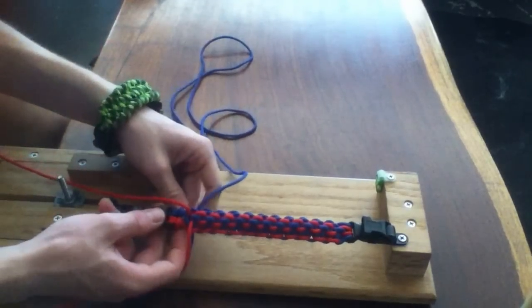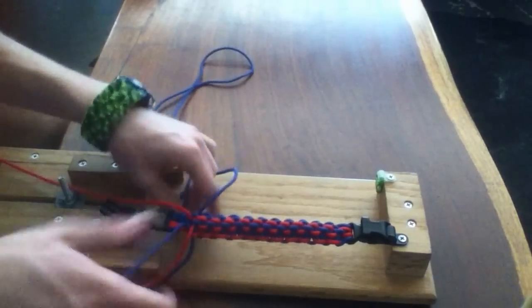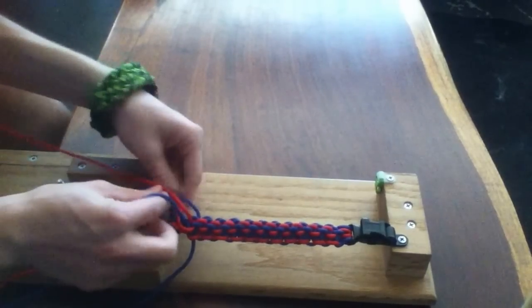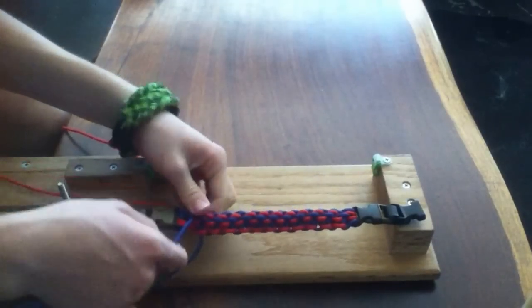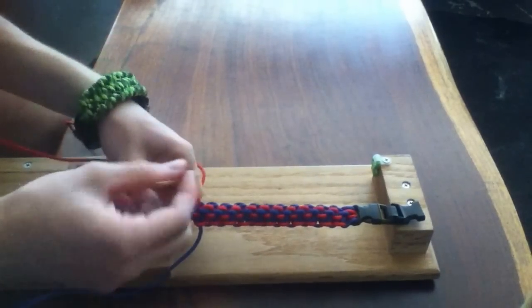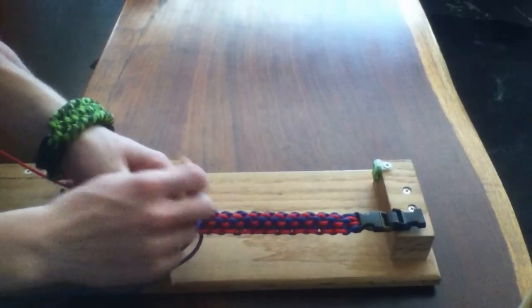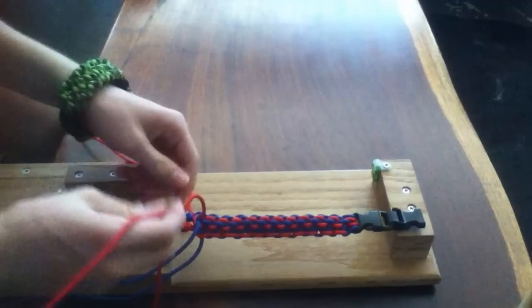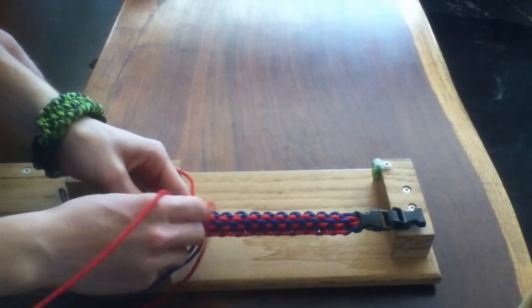So continuing the pattern, going under, and then bringing the other one around and through. This is where one of the needles would come in handy. Just stick it through there, kinda lever it back, and that opens up a little gap that you can stick your cord through.